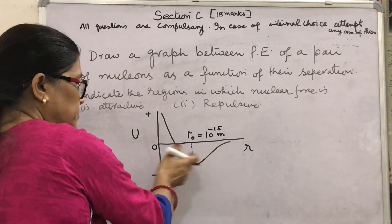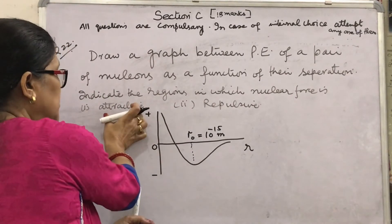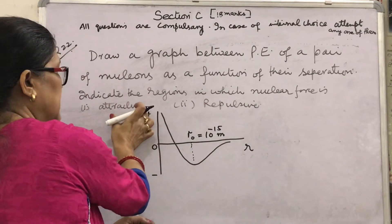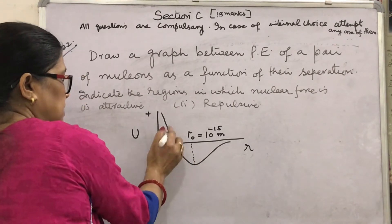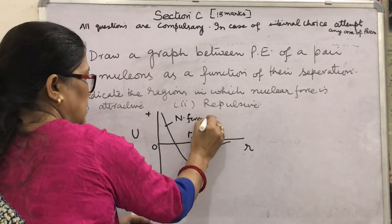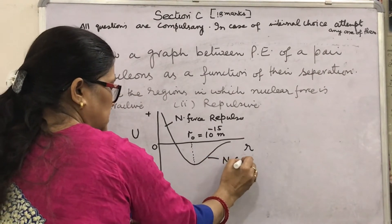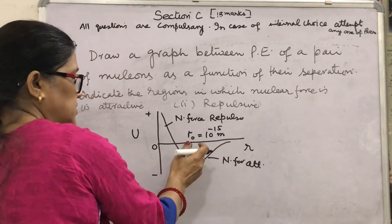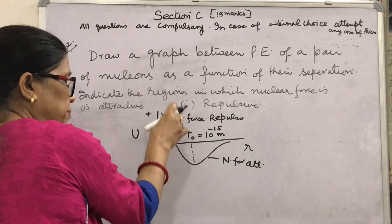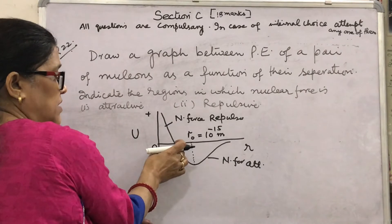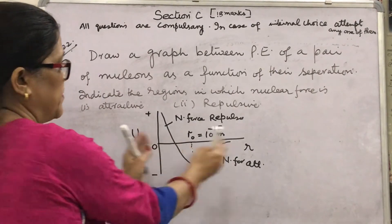The equilibrium distance R₀ is approximately 10⁻¹⁵ metre. If the nucleon comes further closer, there is a sharp increase in potential energy — the nuclear force becomes repulsive. In the region beyond R₀, nuclear force is attractive; in the region below R₀ (closer than R₀), nuclear force is repulsive, and the nucleons move apart from each other.